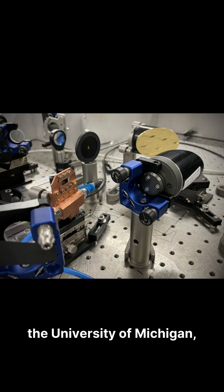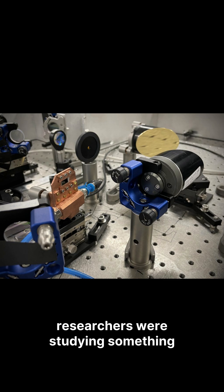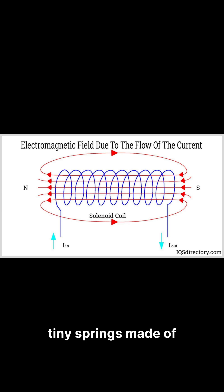In a lab at the University of Michigan, researchers were studying something called quantum oscillations. Think of them like tiny springs made of electrons, vibrating inside metals when you hit them with a magnetic field.